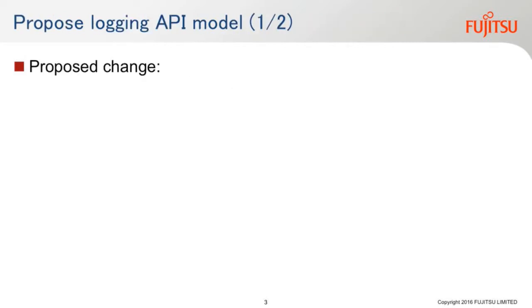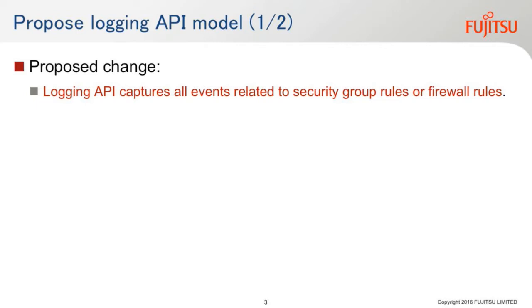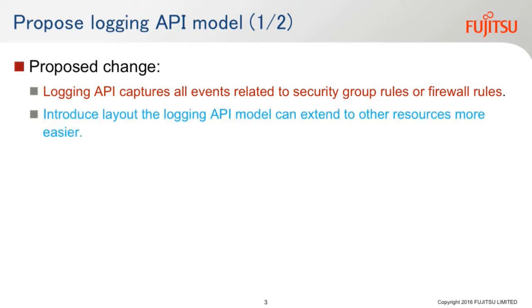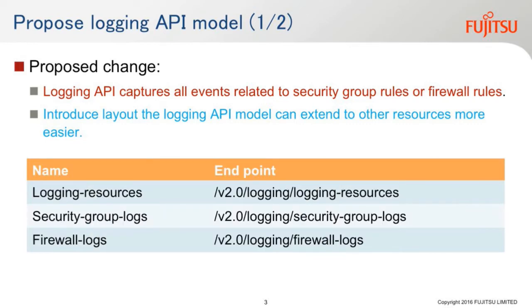We are currently trying to propose the logging API for Neutron with some proposed changes in the API. This logging API can capture events related to security group rules or firewall rules. We are also trying to lay out a logging API model that can extend to other resources more easily. As you can see on the screen, it's an example of the API model we are going to propose. The details of the API I will explain in the next slide.